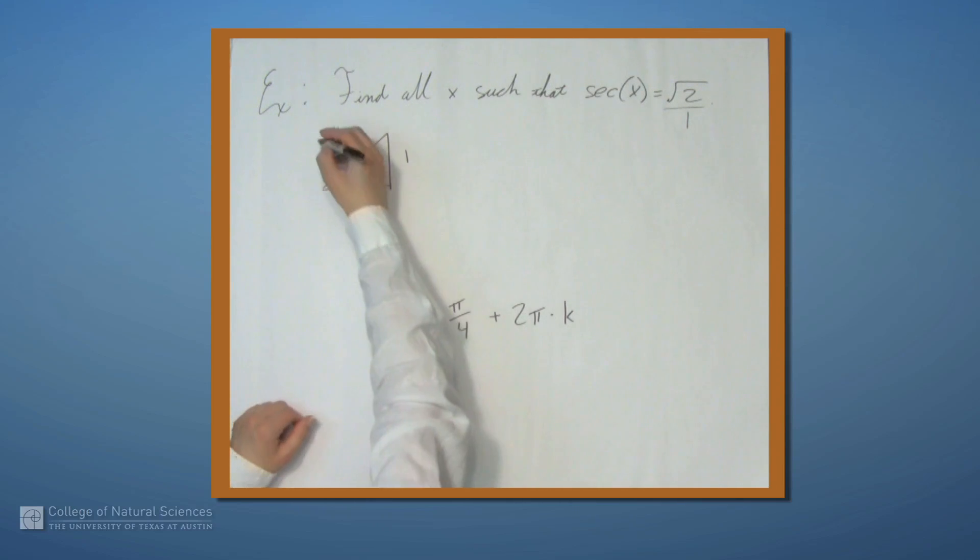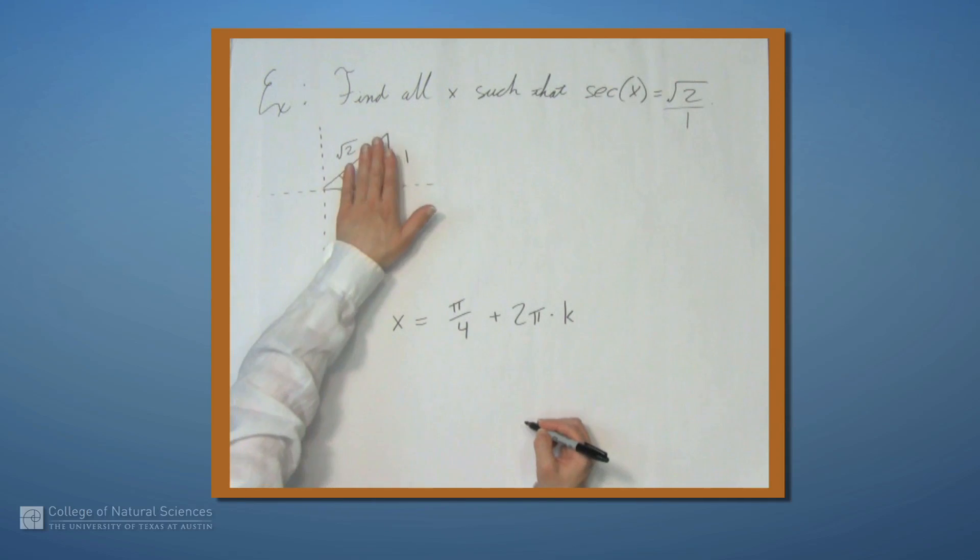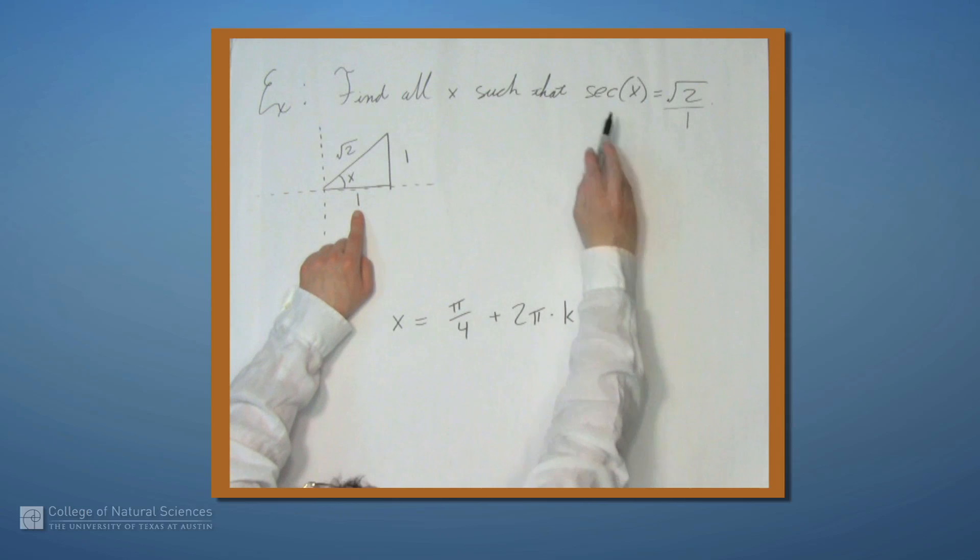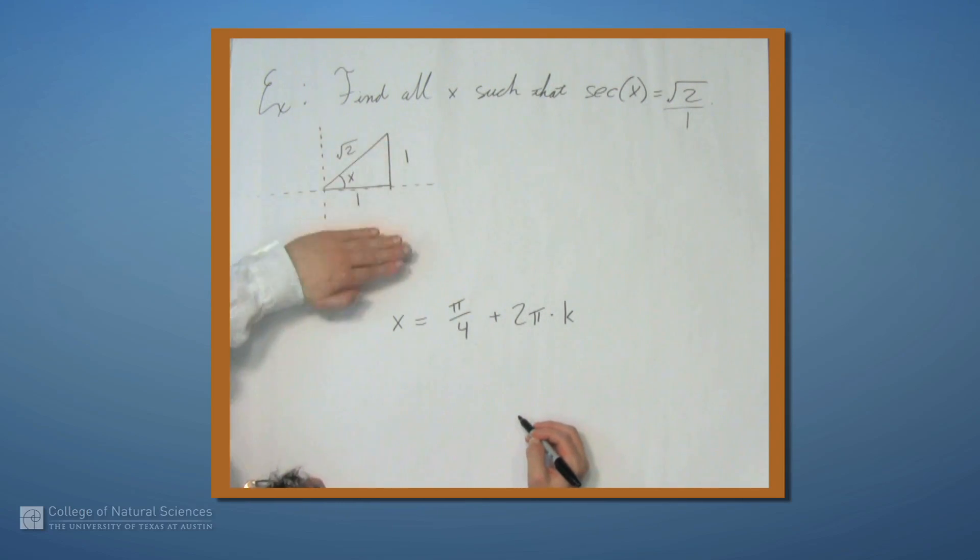So let's go back to this thing because we still haven't gotten everything yet. Let's imagine this is sitting on coordinate axes. And in the previous example, we flipped this over the y-axis to get another value where sin equals 1/2. Well, this time if we flip it, this 1, the adjacent side, will become a negative 1. So the secant will no longer be the square root of 2. But if we flip this over the x-axis, then this adjacent side stays 1. We're changing the opposite side from 1 to negative 1, but we don't care about that. All we care about for secant is the hypotenuse and the adjacent side.